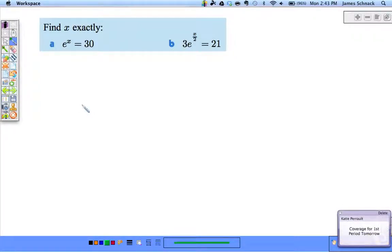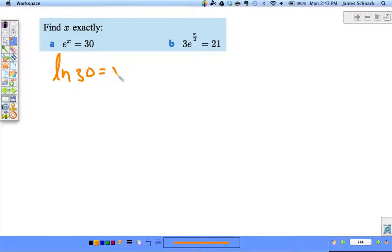Find x exactly. What's the base here? e. So let's change this to log form. Natural log of 30 equals x. The exponent's by itself, so x equals the natural log of 30. We could plug that into a calculator for an approximation, but this is exact.